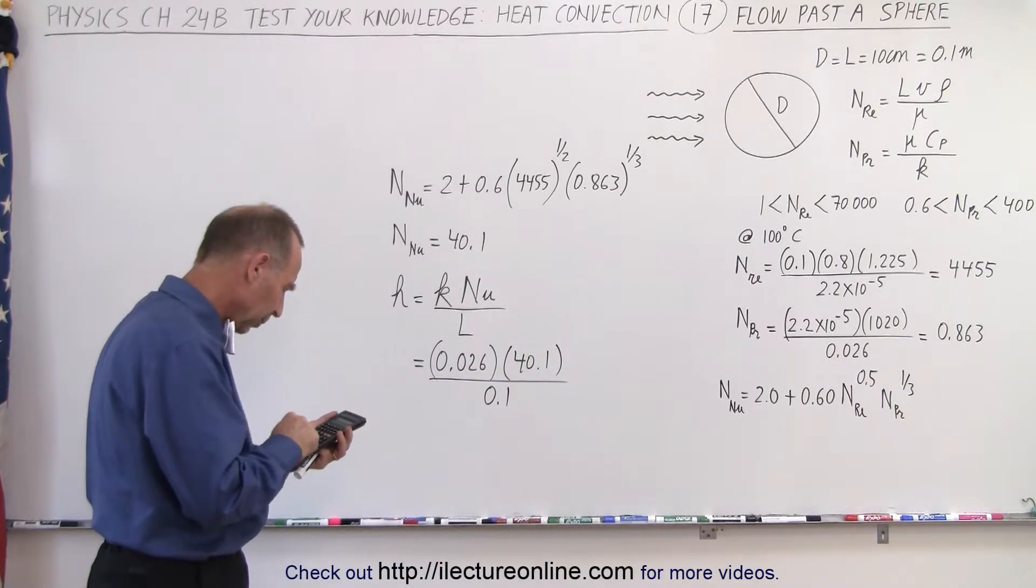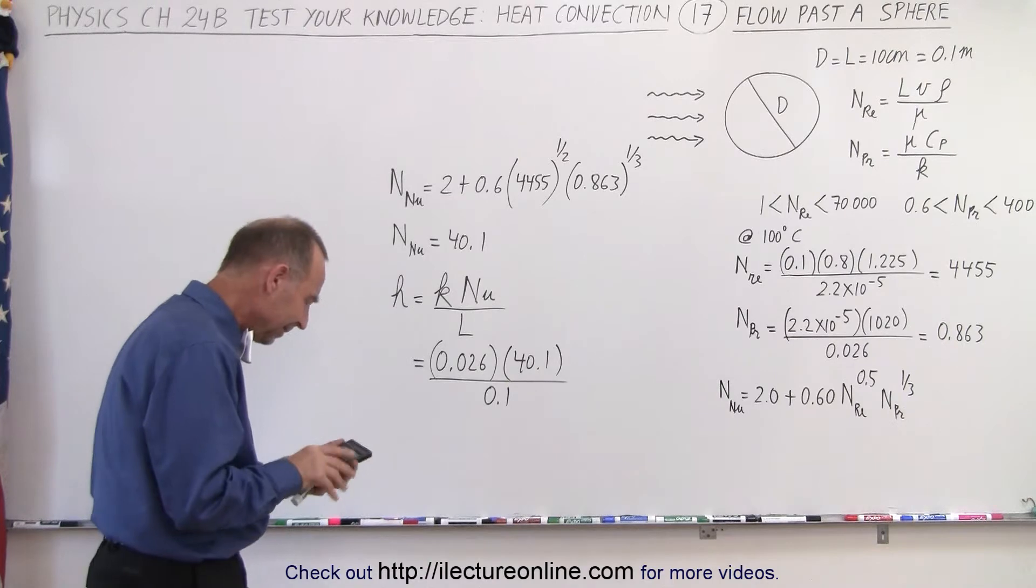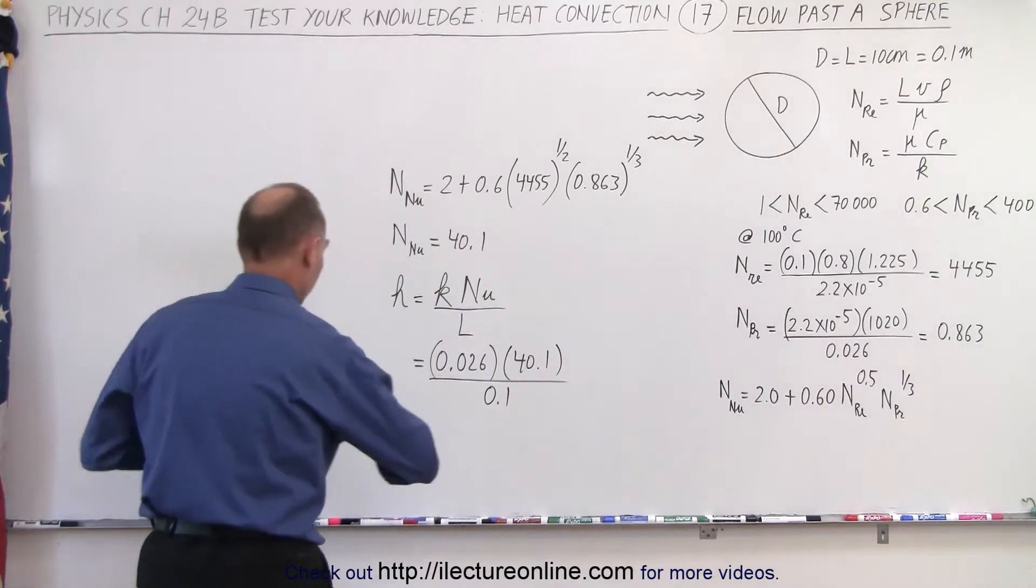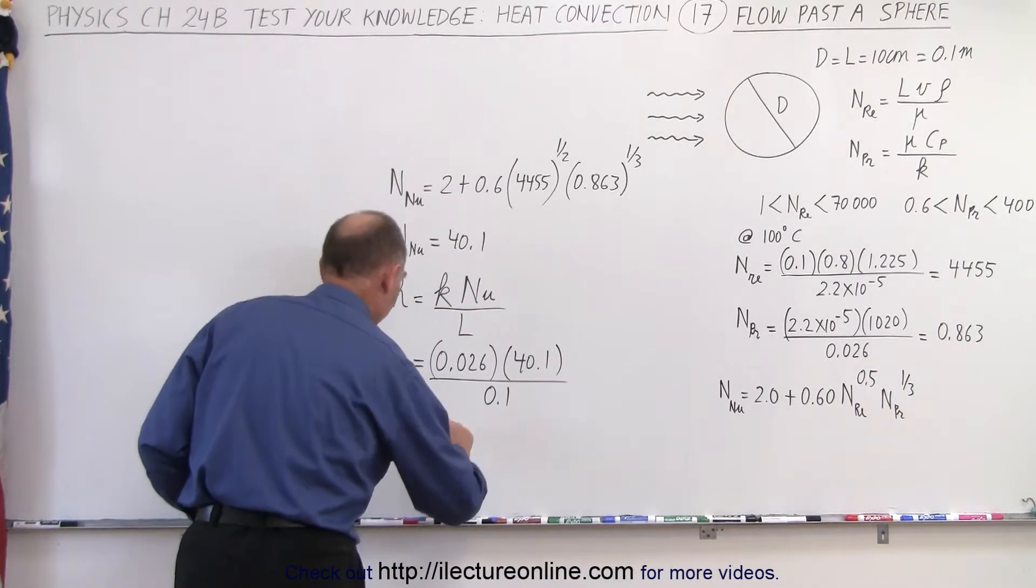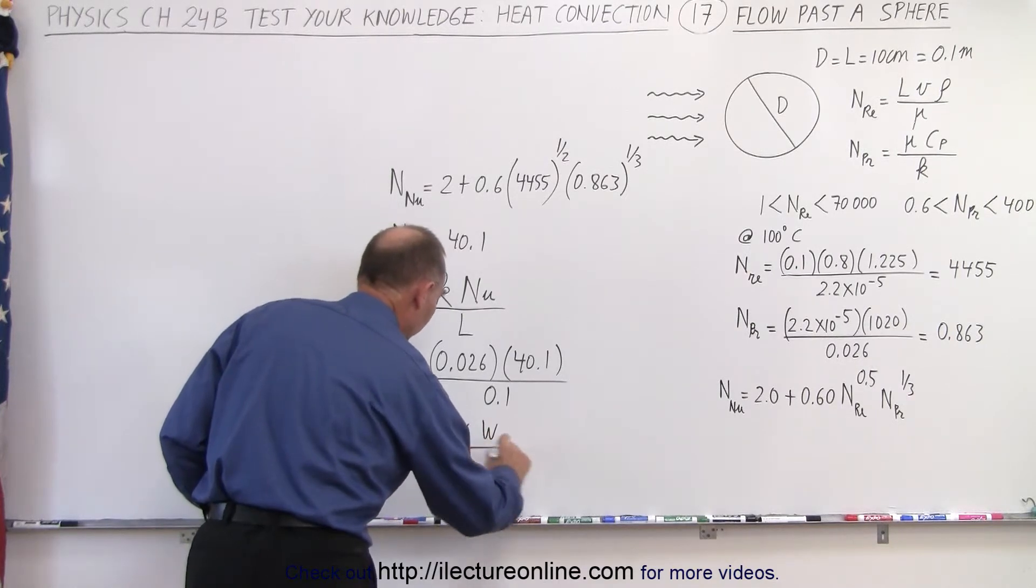So times 0.026 divided by 0.1 and we get 10.4. So the transmission coefficient will be 10.4 watts per square meter times kelvin.